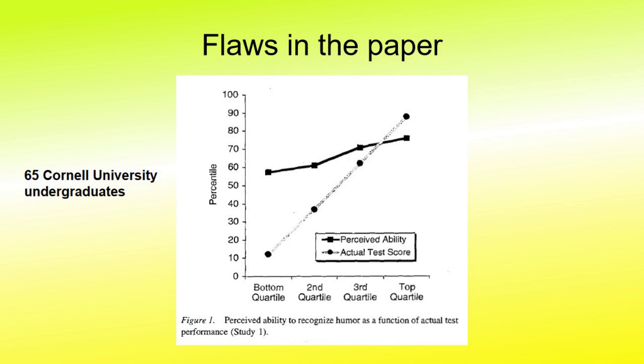This is the graph of the first of the four studies from this paper. It is based on the ability to recognize humor. Their responses to specific jokes were compared to what was given by professional comedians. One of the fundamental flaws in this is that humor is highly subjective.